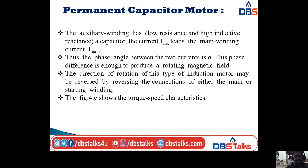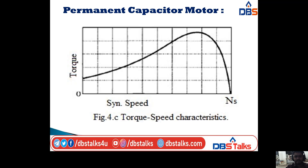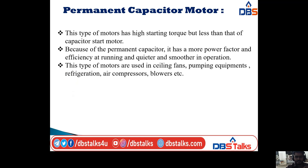The direction of rotation of this type of induction motor may be reversed by reversing the connections of either the main or starting winding. The torque-speed characteristics of the permanent capacitor motor are shown, with the graph drawn between torque and synchronous speed. This type of motor has high starting torque, but less than the capacitor start motor.